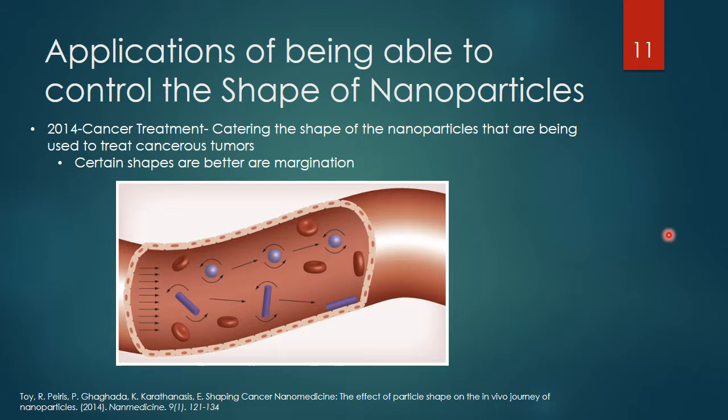Shape could affect the nanoparticles as they treat cancerous tumors because the nanoparticles have to be injected and move through the bloodstream. As they move through, they have to be able to — through a process called margination — move from the flow of blood toward the endothelial cells and into the blood vessels.